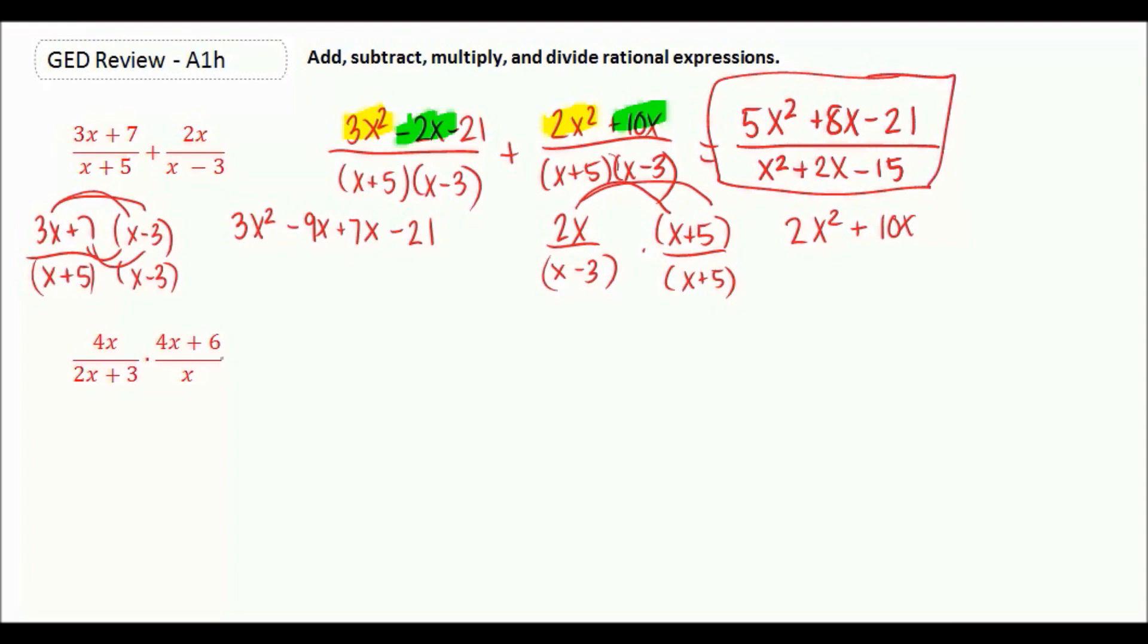For multiplying, we can first factor our polynomials and see if we can divide out any common factors. We're going to have 4x, nothing to factor here, it's just 2x plus 3.